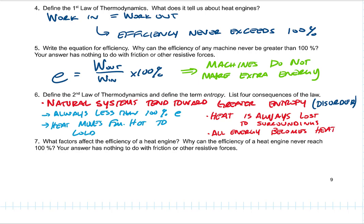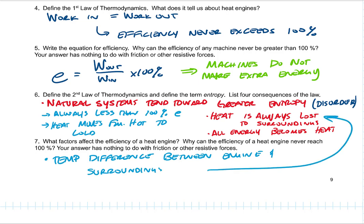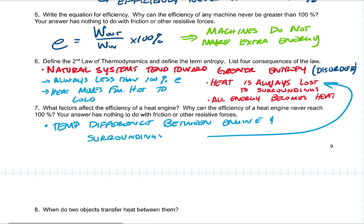What factors can affect the efficiency of a heat engine? It's the temperature difference between the engine and the surroundings. Because heat is always lost to surroundings, we can't ever get to 100%. It's always going to leak out. We're always going to lose heat in this thing.